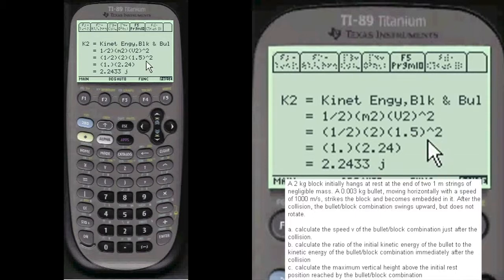And then find the, which is 2.2433 joules. And if you want the ratio, then you can, on your paper, put that, put the kinetic 1 over kinetic 2 for the ratio.